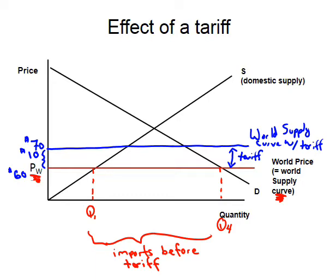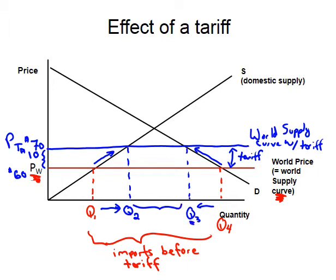Several things now happen. The price has increased to PT — the price with tariff — at $70. Domestic suppliers respond by moving along the domestic supply curve and supplying more at Q2, increasing their production. Domestic consumers, whether consuming imports or domestic goods, respond to the higher price by demanding less — we call this Q3. The amount of imports has shrunk, now from Q3 to Q2.